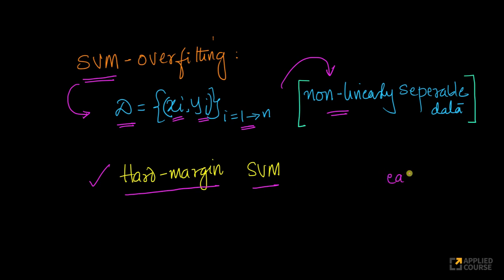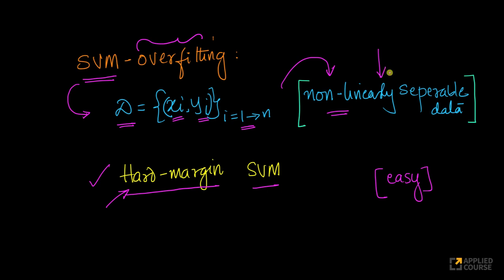This question is surely on the easier end of the spectrum of questions you can expect, because it is all about how to overfit a specific model. The two subtle hints given here are: it is a hard margin SVM, not a soft margin SVM, and the data is non-linearly separable.